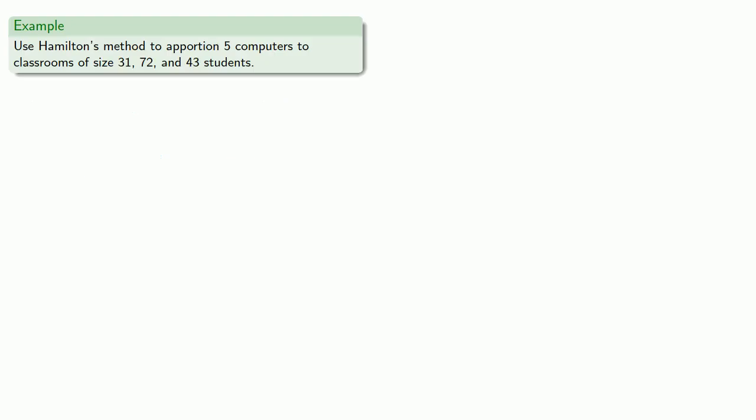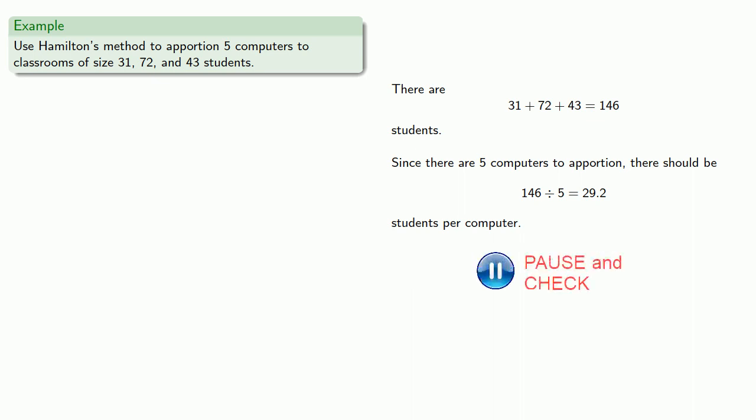Let's use Hamilton's method to apportion five computers to classrooms of size 31, 72, and 43 students. First we find there are 146 students, and since there are five computers to apportion, there should be 29.2 students per computer. This is the standard divisor, which we'll use in the Hamilton apportionment.